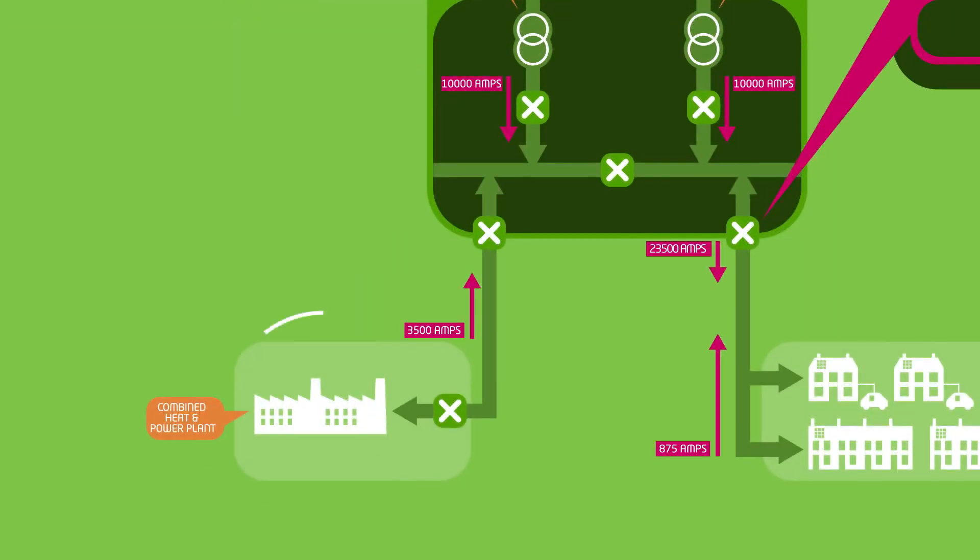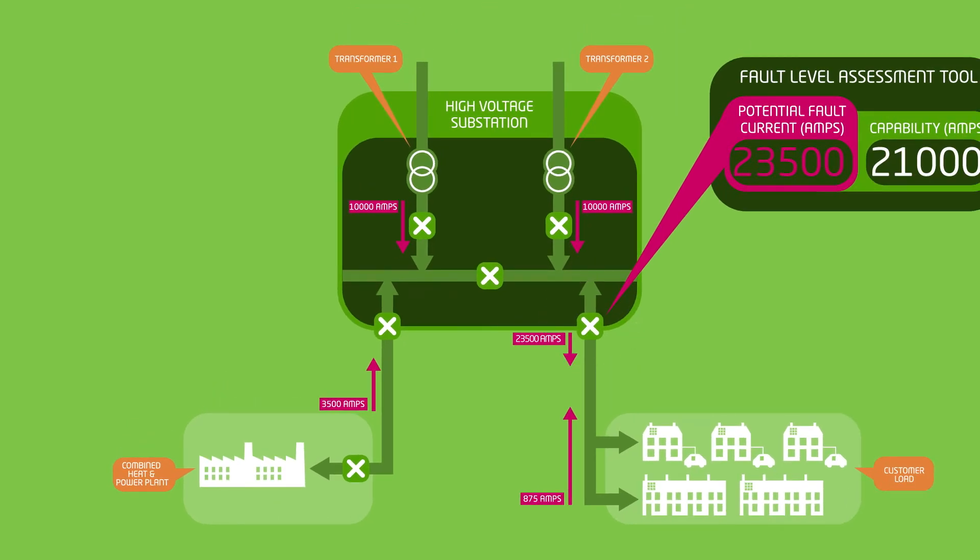Here, one of our customers owns a combined heat and power plant, or CHP, and exports surplus electricity onto the network. In the event of a fault, the CHP would create additional fault current and overload the high voltage circuit breaker, which could damage the network and cause longer power cuts for our customers.